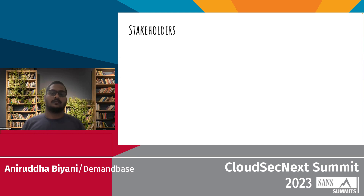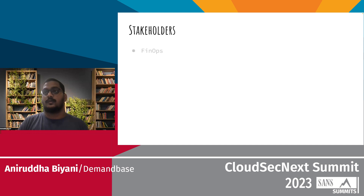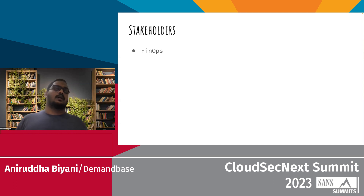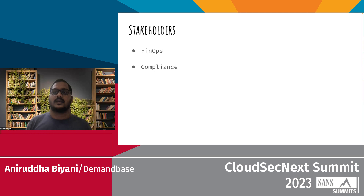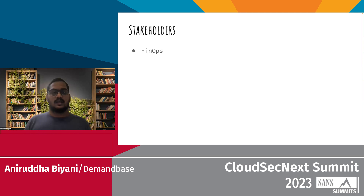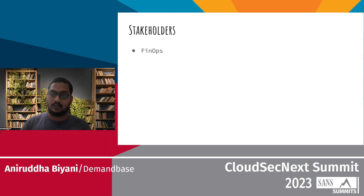Now talking about stakeholders — security was obviously one. FinOps was another stakeholder; a lot of their policies around tag management, right-sizing of infrastructure, under-utilization reporting was really helpful for the FinOps organization to have that visibility. We'll talk about how we did it in later slides.